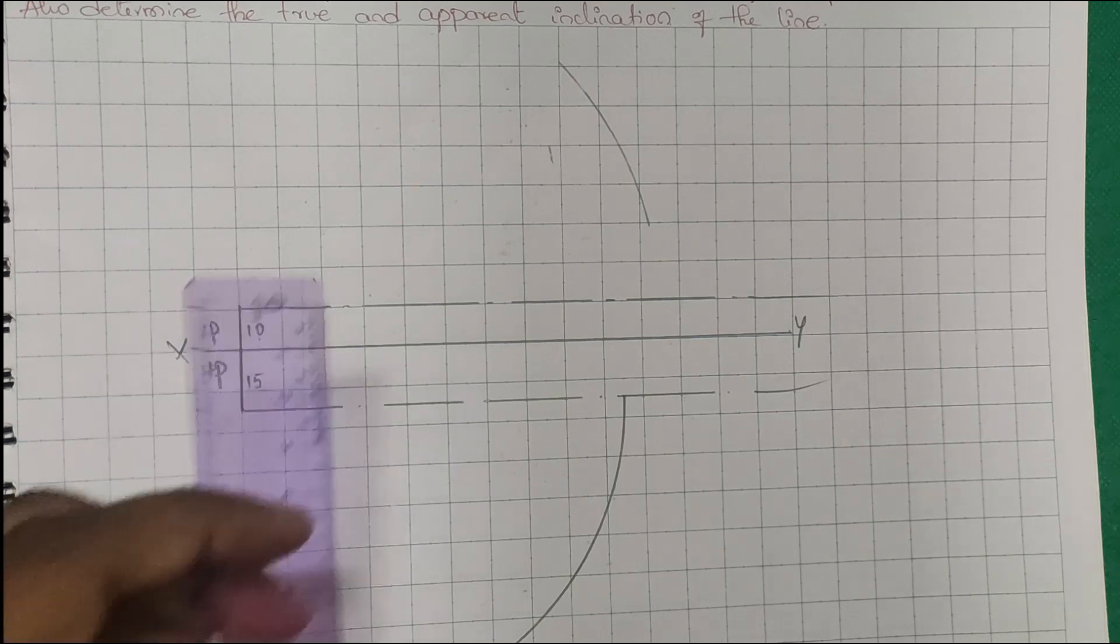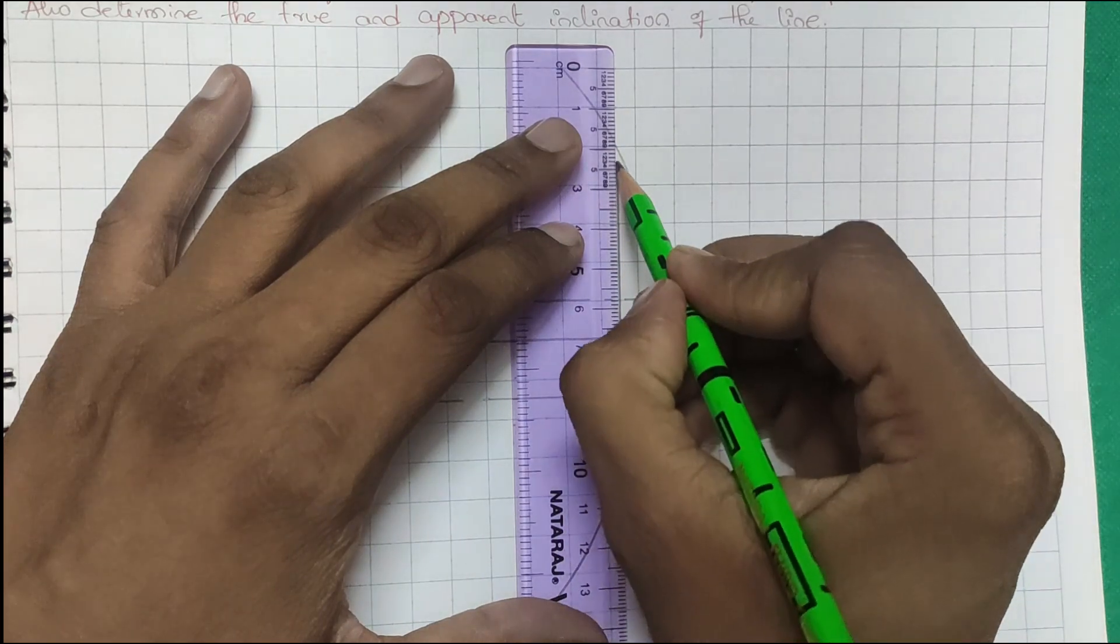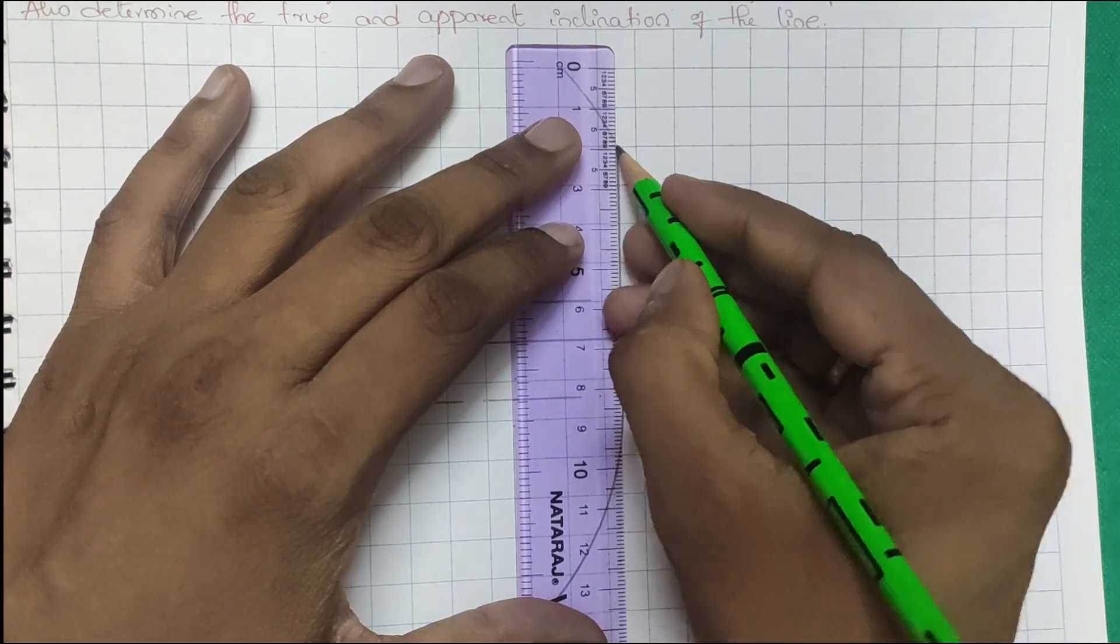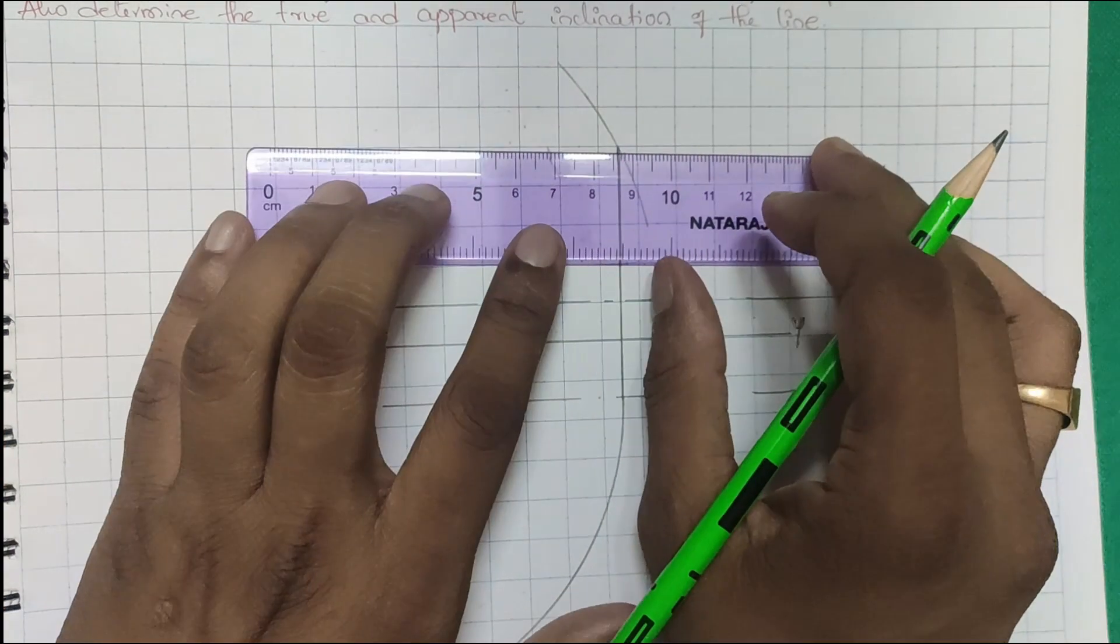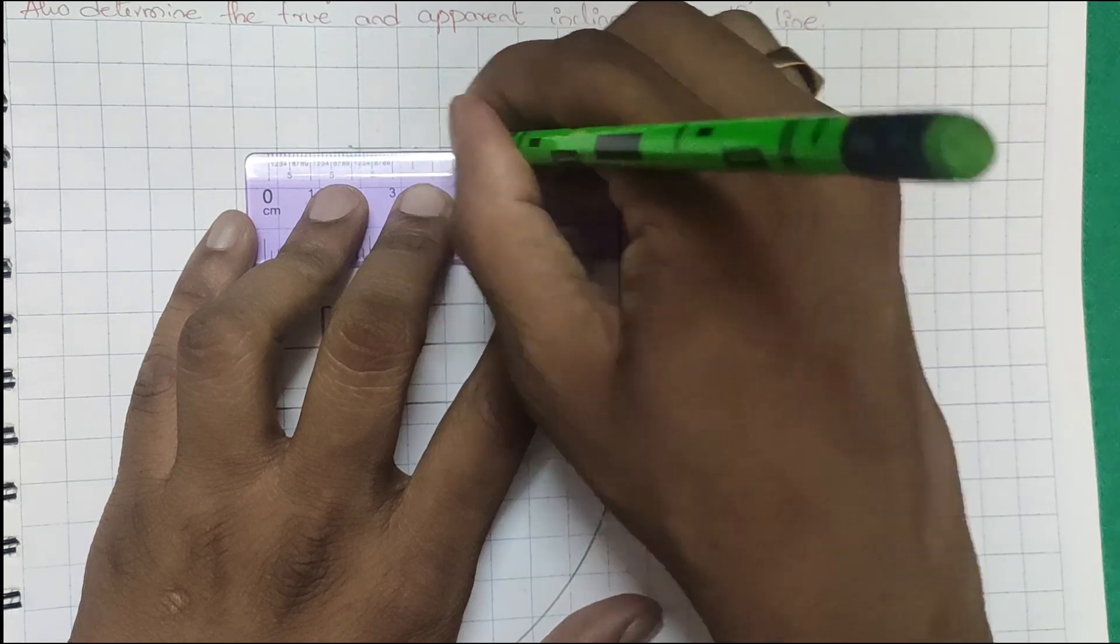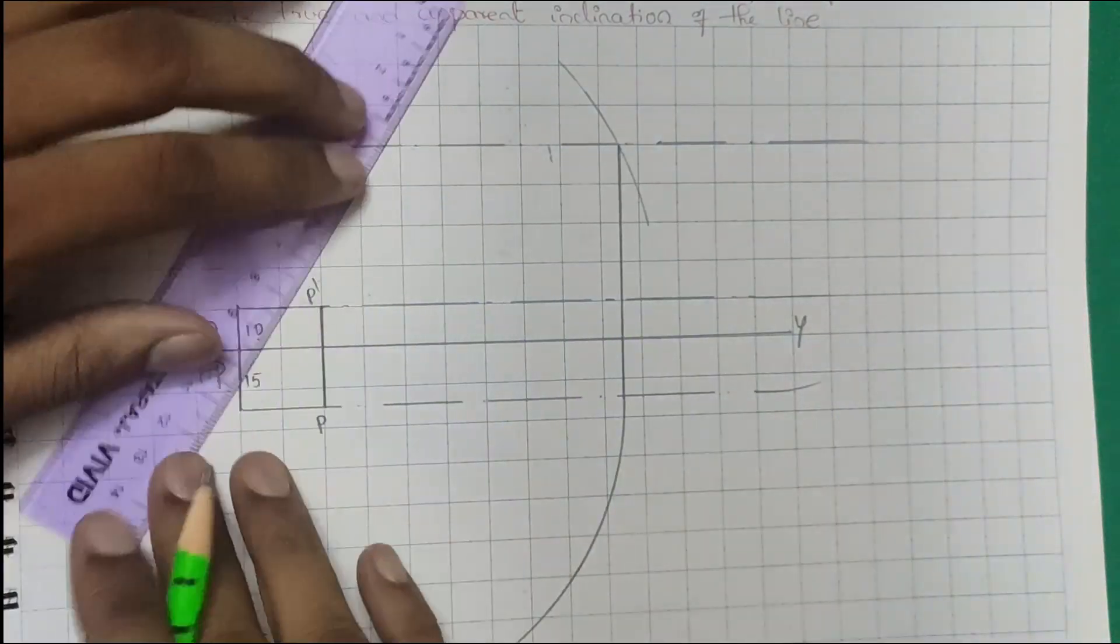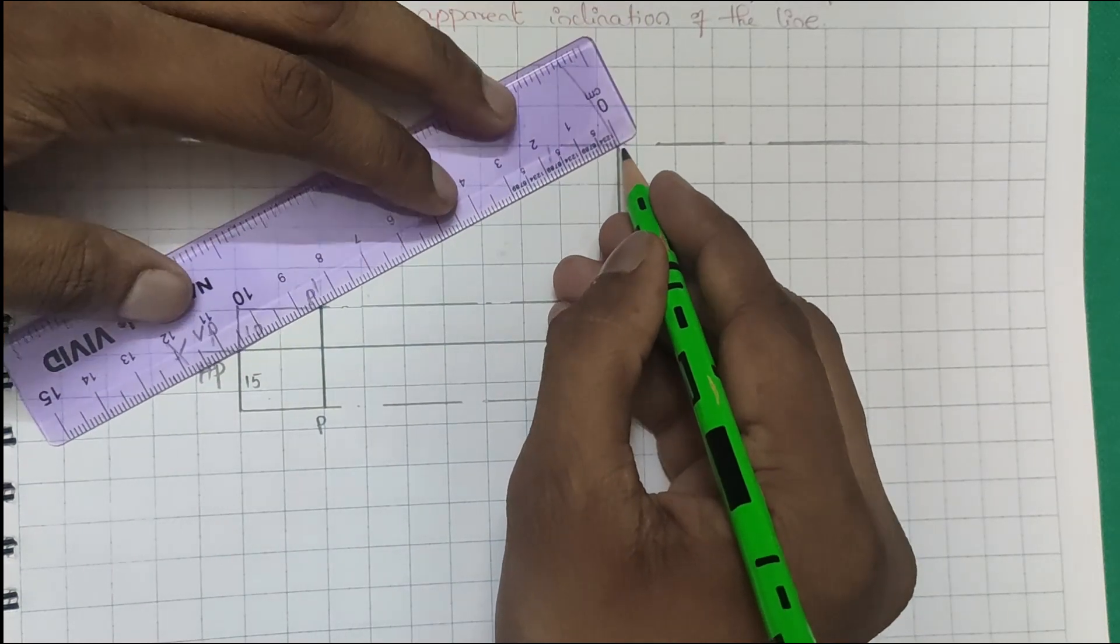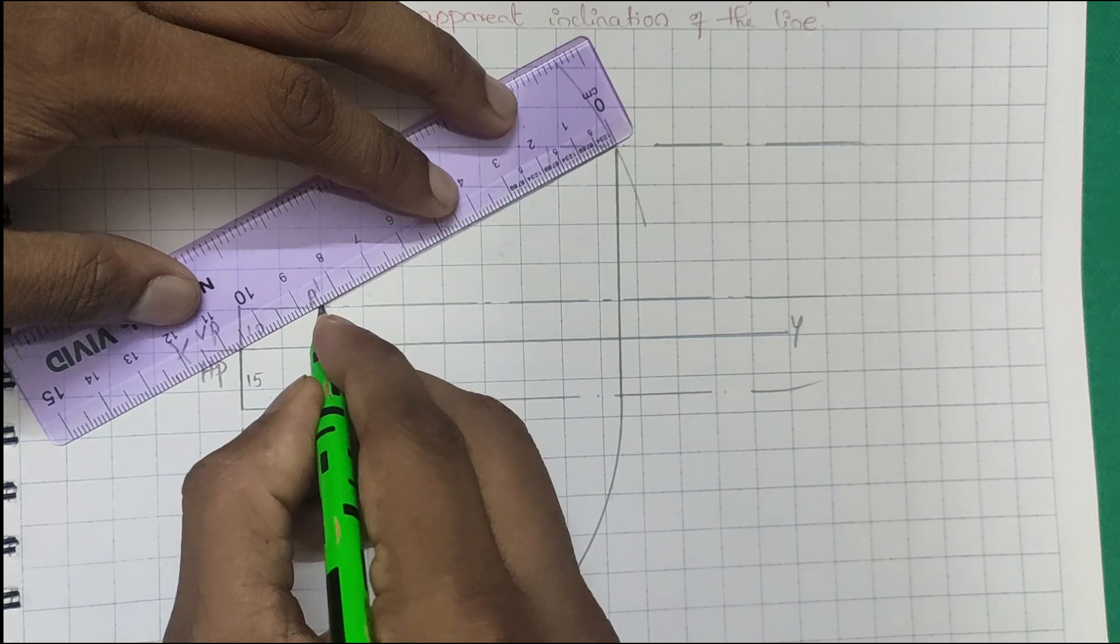Now I will extend this line which intersects the 80mm arc. Then I will draw the locus line and join. You should get 85 here. Yes, you are getting 85.